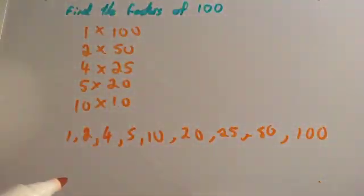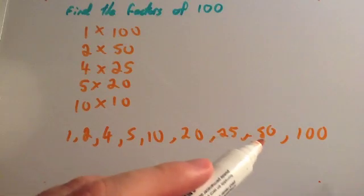So the factors of 100 are 1, 2, 4, 5, 10, 20, 25, 50, and 100.